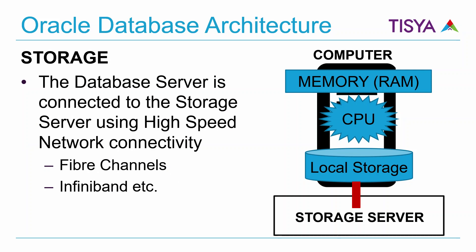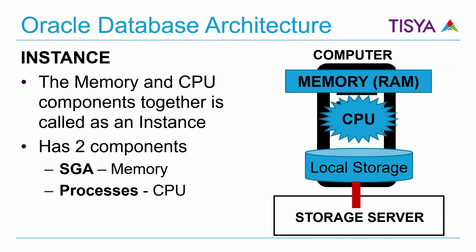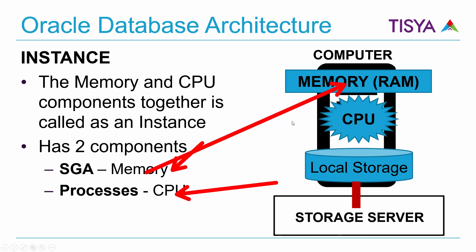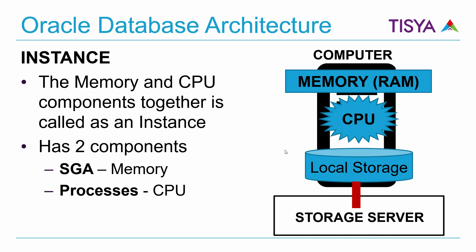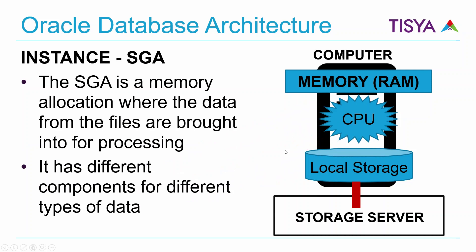When we need to use the storage in a computer, we need to read it into memory — that is where an instance comes into play. An instance is made up of two primary components: the SGA and the processes. The SGA is the memory component, and the processes are going to use the CPU to do whatever processing is needed.